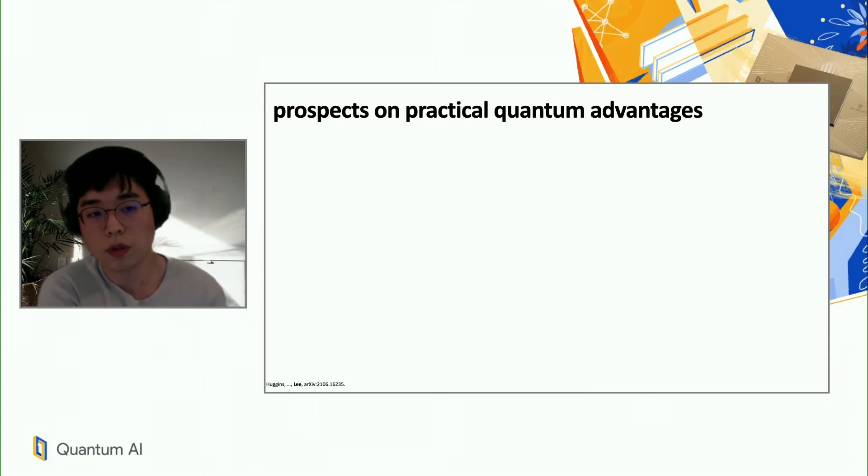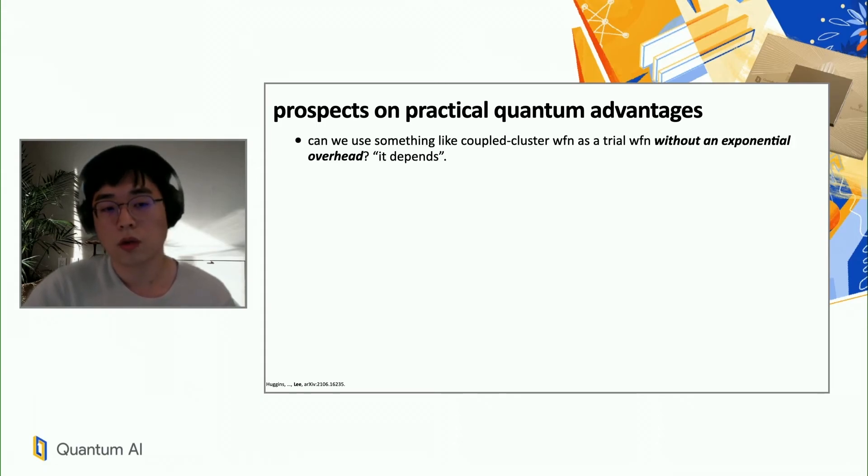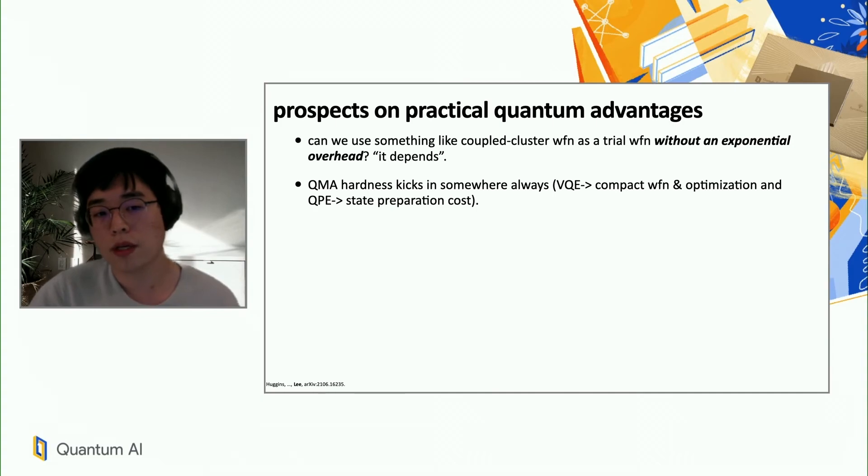Before I conclude, I wanted to give you some prospects on practical quantum advantages of this algorithm. So in the beginning of this presentation, I asked you a question, which is, can we use something like a coupled cluster wave function as a trial wave function without an exponential overhead? Well, the answer, unfortunately, is it depends. The reason is QMA hardness has to kick in somewhere, as always. And in the case of VQE, we have trouble in writing down a very compact wave function to represent the exact ground state. And then the optimization problem, even if we had a compact wave function, the optimization problem is going to get to us. In the case of quantum phase estimation, there is this state preparation cost, which formally scales exponentially with system size. So it has to kick in somewhere.